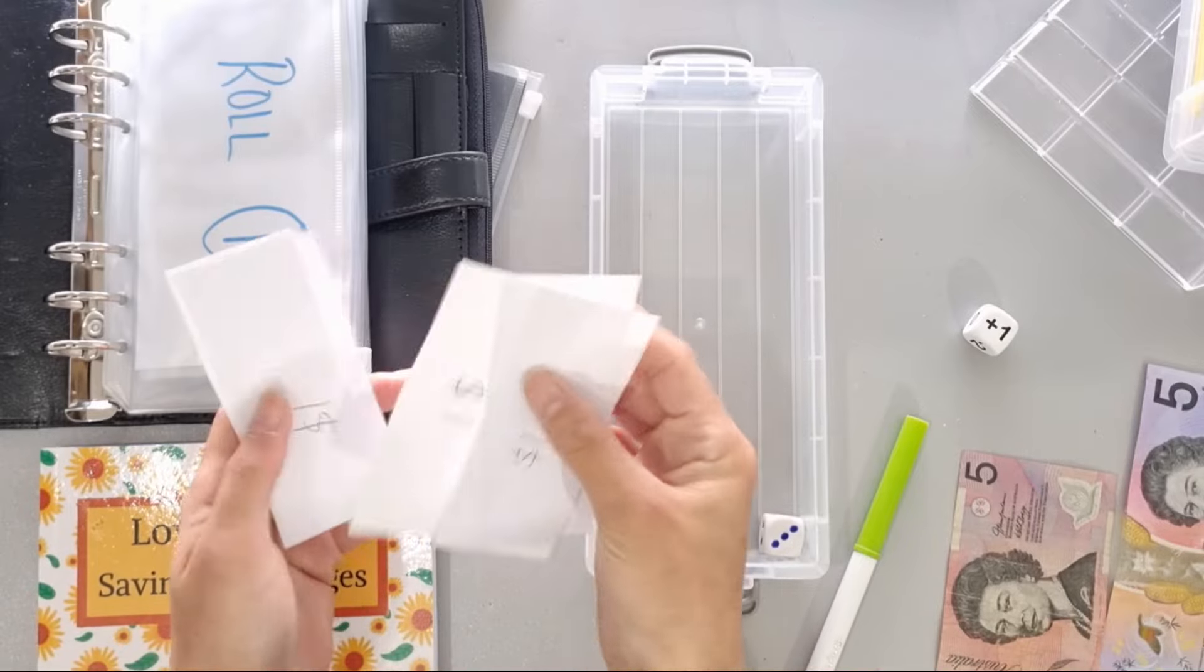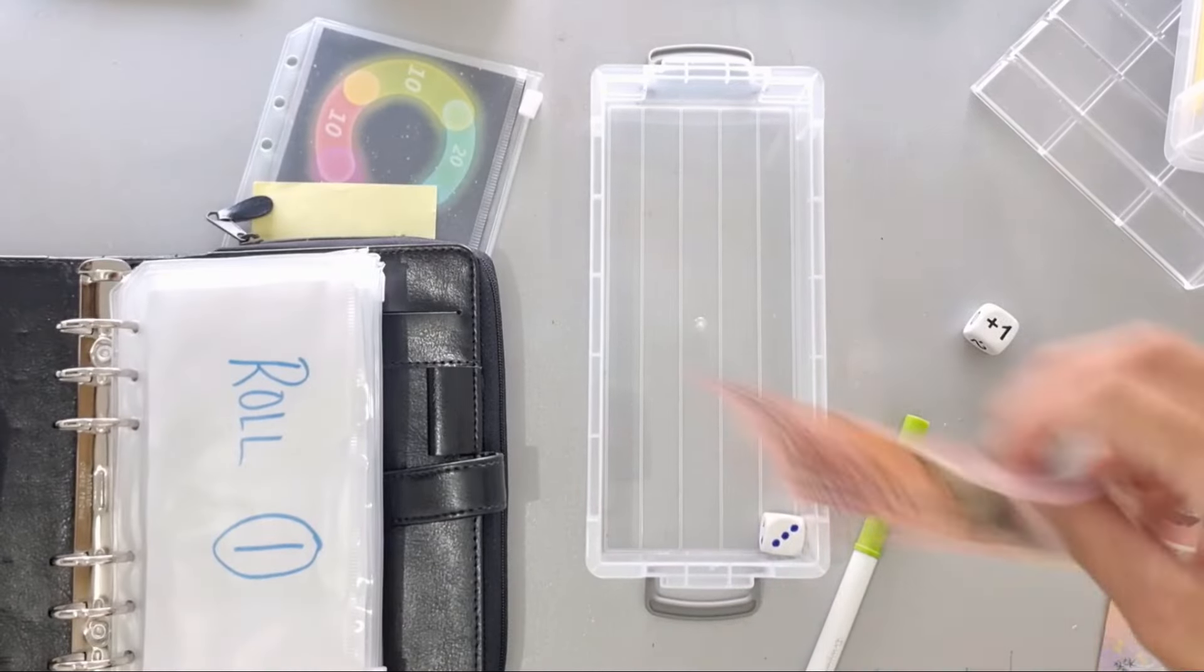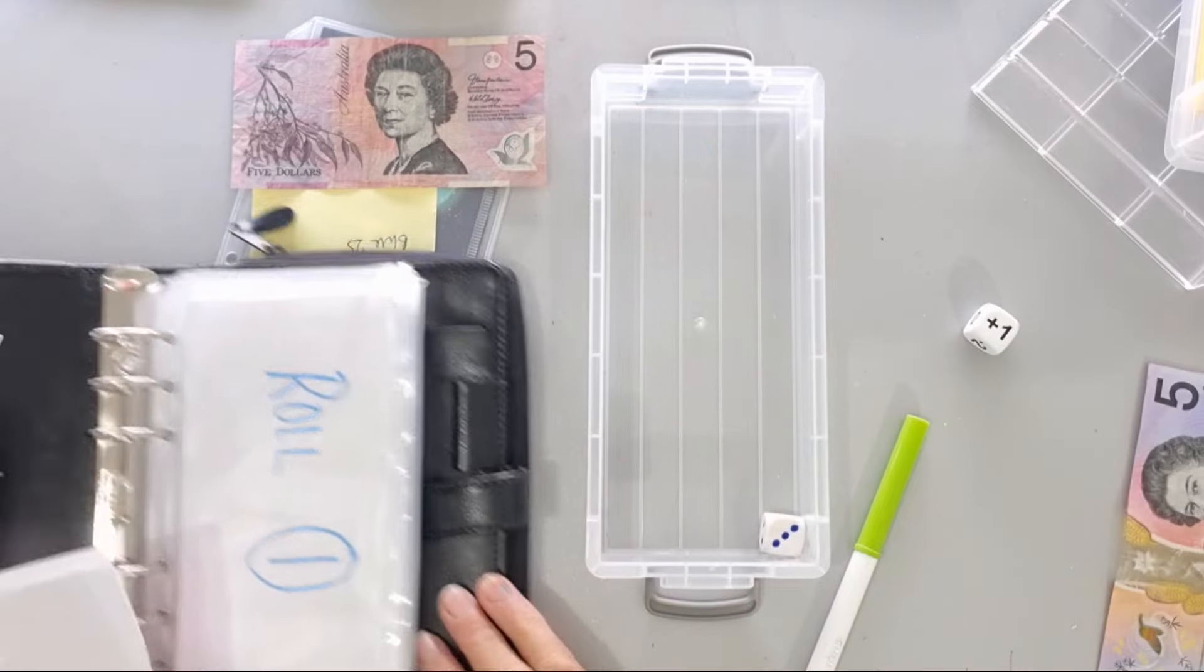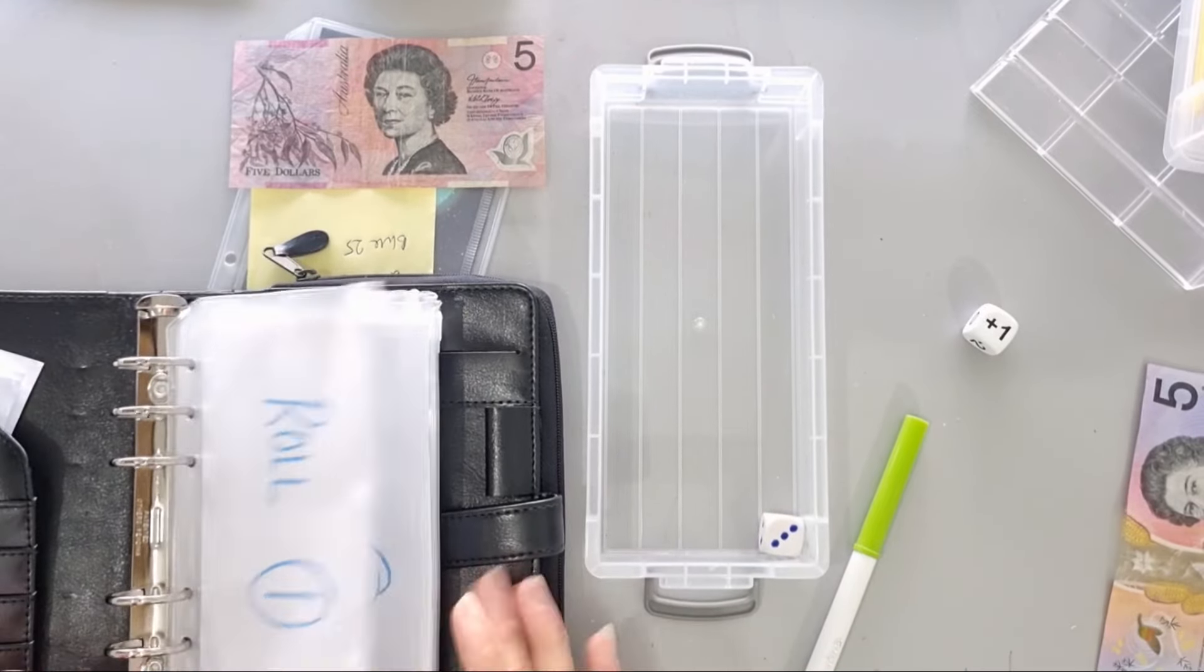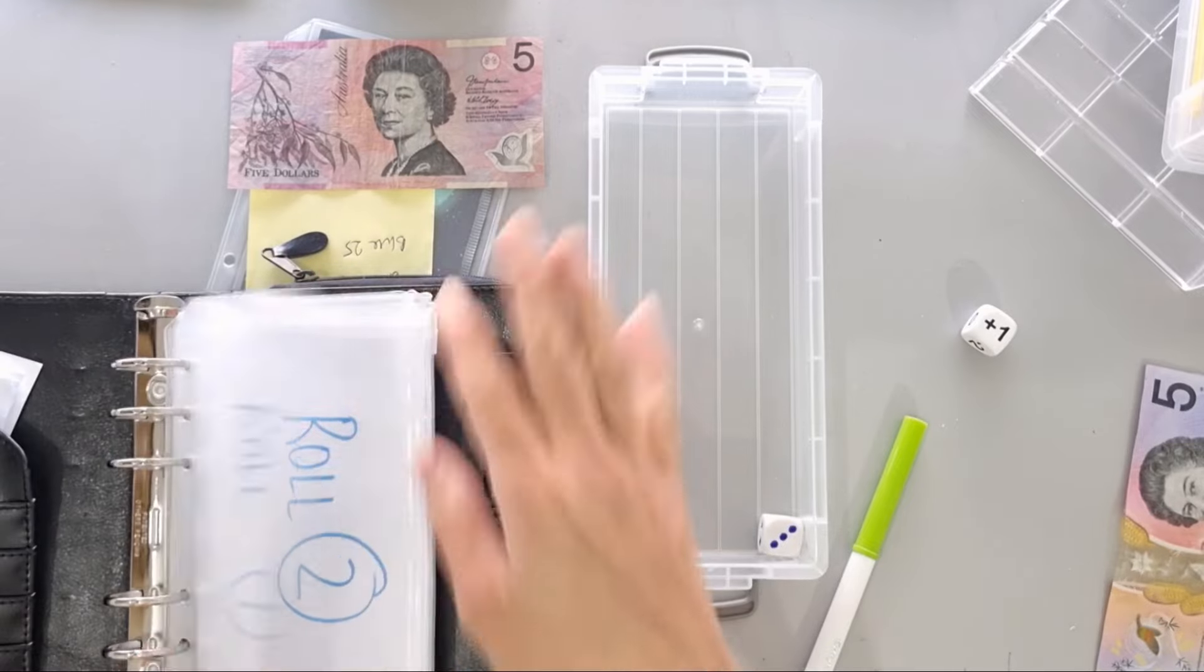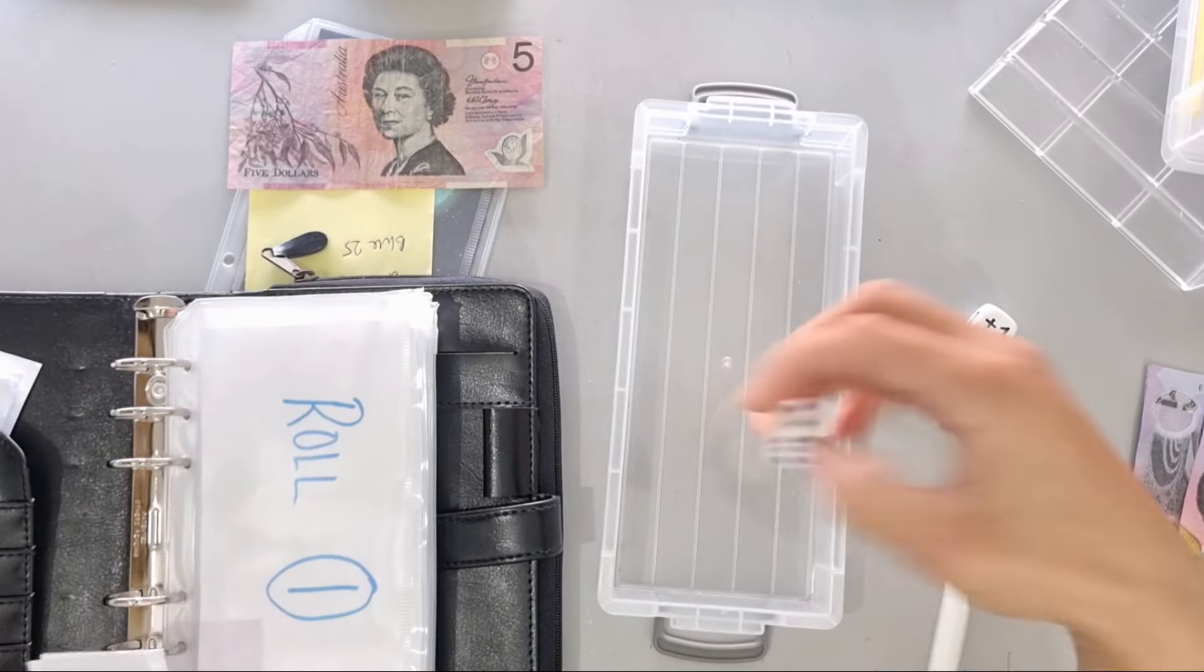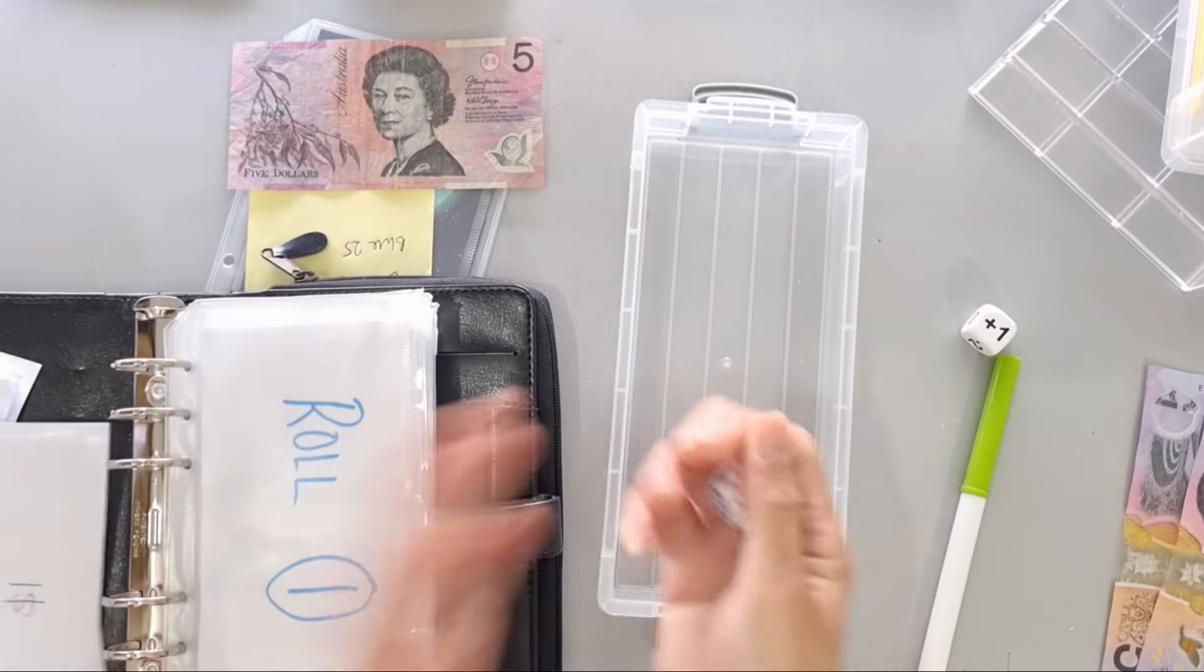So without further ado let's get started rolling. I've got five of my one dollar placeholders because I only have $5 to roll, and then we will see how we can reallocate the coins with the notes so that we don't have to keep paper money. Let's roll the first one.